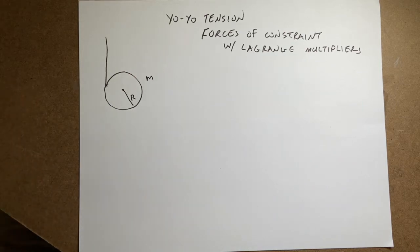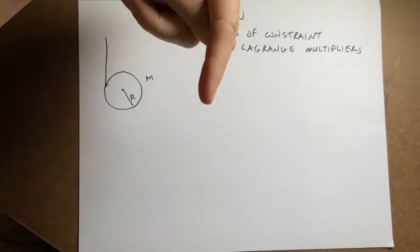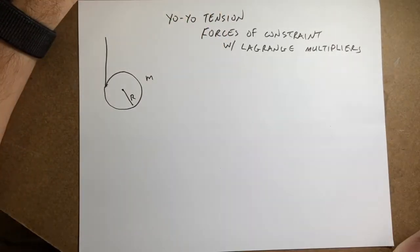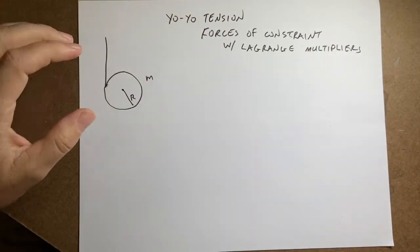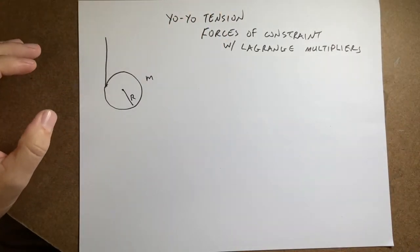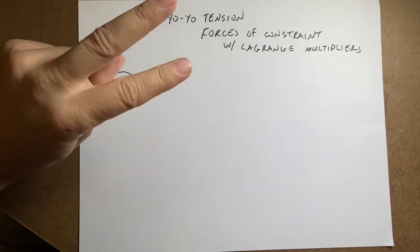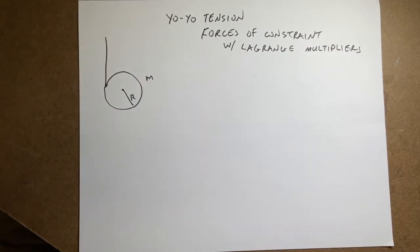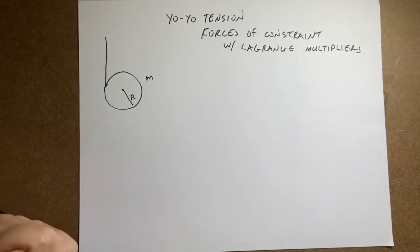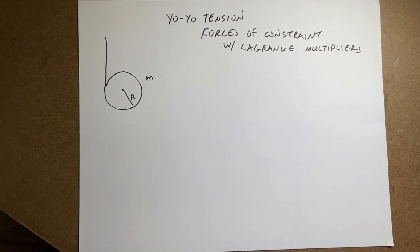Who is ready for a physics problem? This guy right here. So this is finding the tension in a yo-yo, and I'm actually going to do it two ways. I'm going to first do this using the Lagrangian and force of constraint with Lagrange multipliers, and then I'm going to do it just using Newtonian physics.